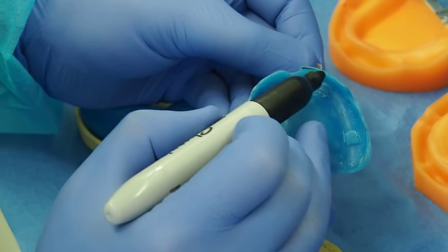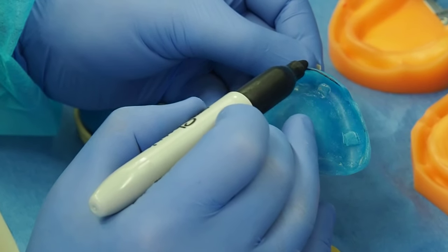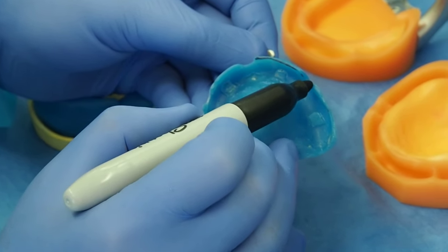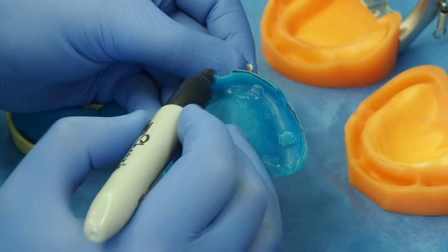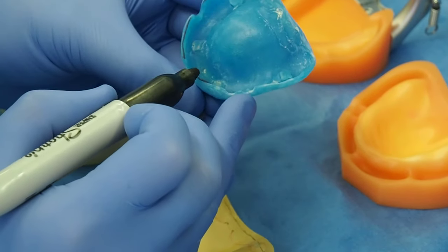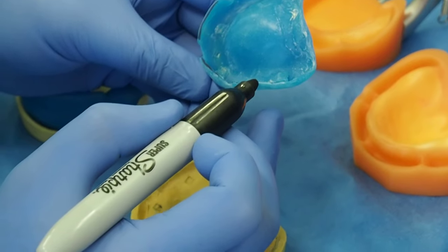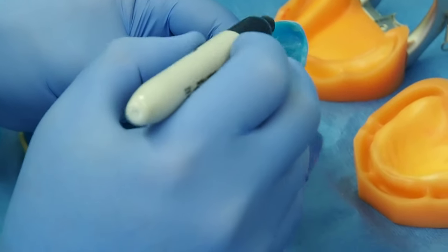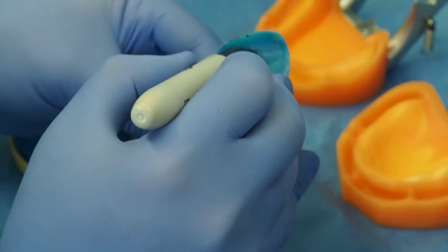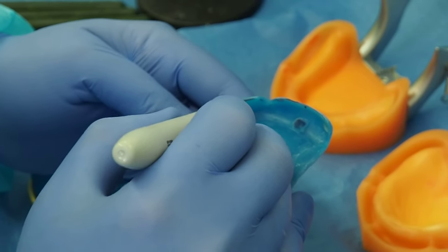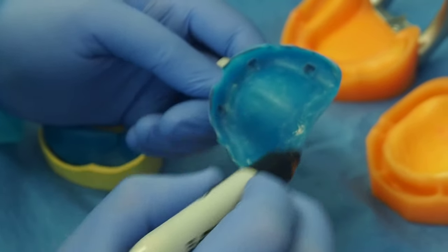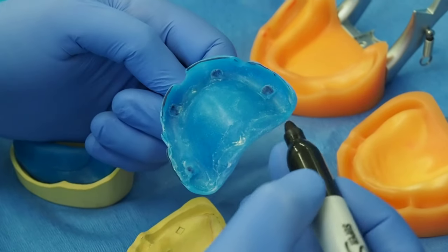It's always good to outline it like this, and then from there just make it thin. Make sure you copy your tissue stops right there, and the posterior seal.